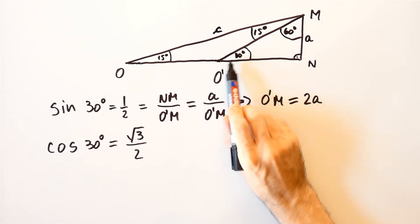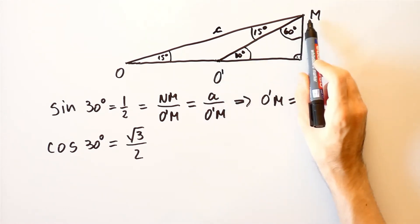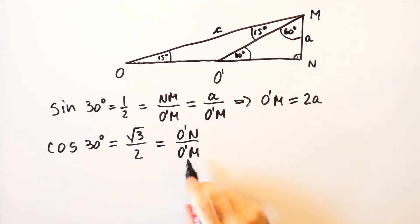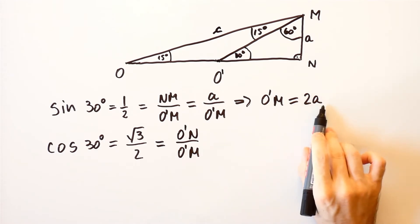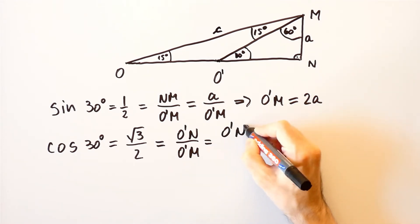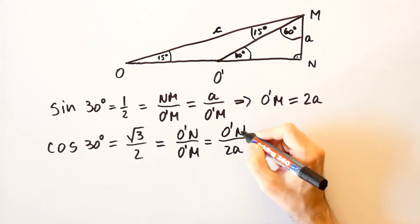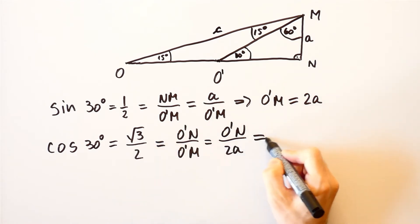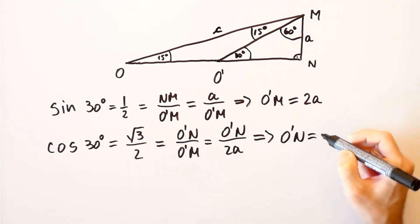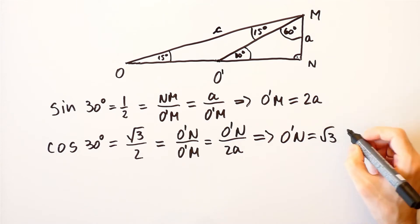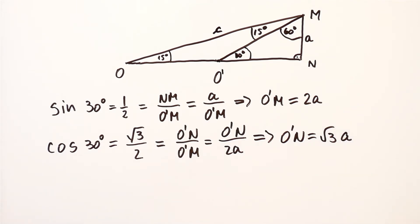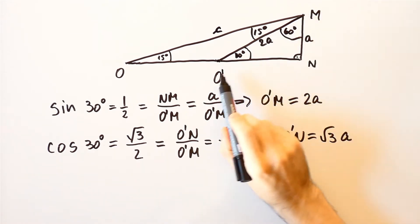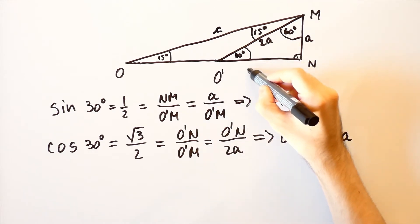The cosine of 30 degrees is equal to O prime n over O prime m. Since O prime m is equal to 2A, this is equal to O prime n over 2A. And since the cosine of 30 degrees is equal to the square root of 3 over 2, then O prime n is equal to the square root of 3 times A.